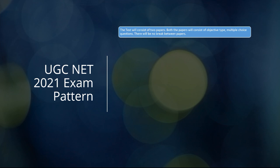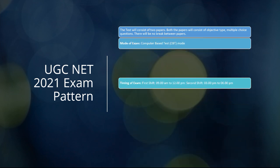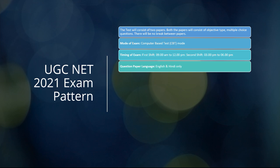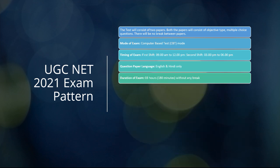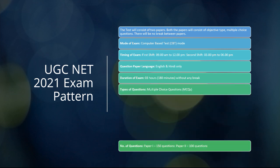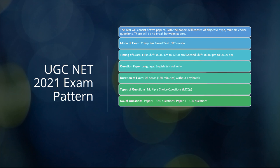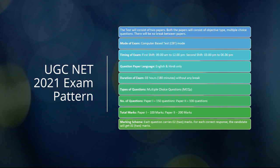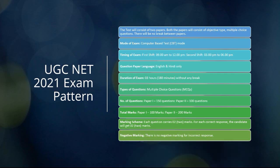The exam consists of two papers, both with objective-type MCQ questions, with no break between them. The exam is in CBT mode, with shifts at 9 AM–12 PM and 3–6 PM. The question paper is available in both English and Hindi. Paper 1 has 50 questions for 100 marks; Paper 2 has 100 questions for 200 marks — totaling 300 marks. Each correct response carries 2 marks and there is no negative marking.